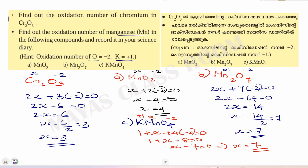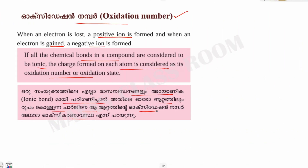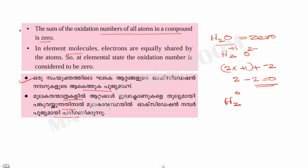This is the oxidation number — the basic concept. The oxidation number represents the charge on each atom. If you have any questions about this theory class, please share with your friends. Please like and subscribe to the channel. You will see the next part in the next class. Namaskaram, thank you.